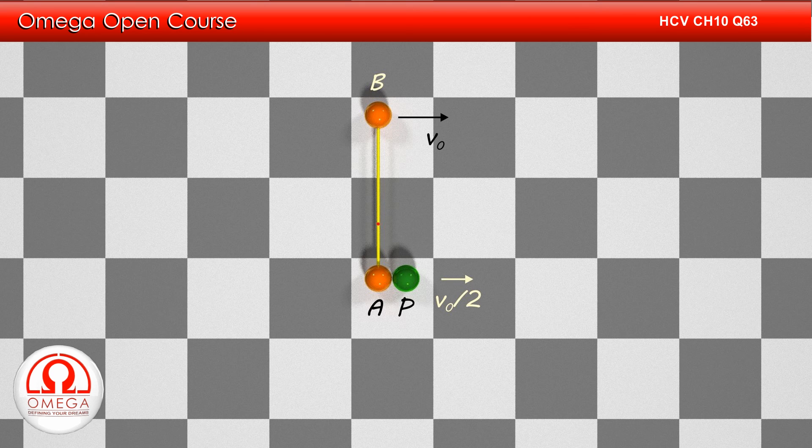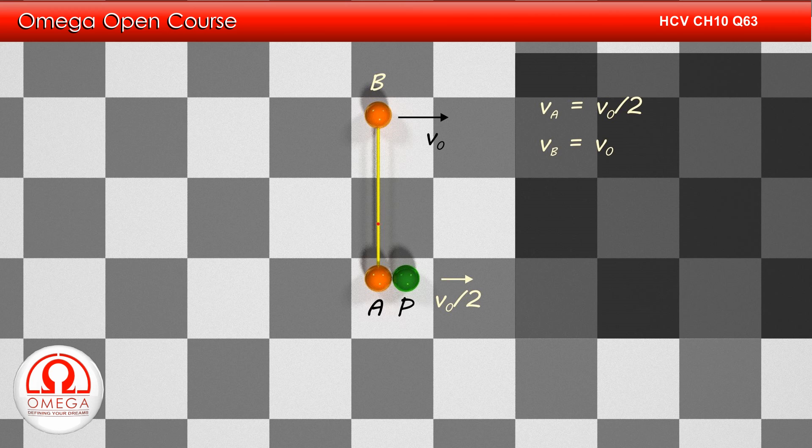Thus, just after the collision, the speed of A is V0 by 2 and B is V0. This is answer to part A of the question.